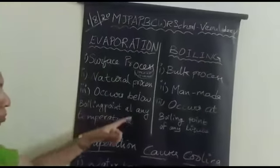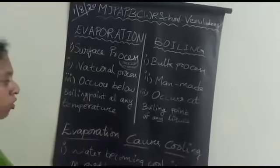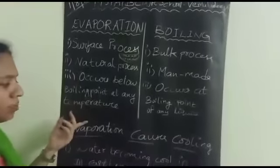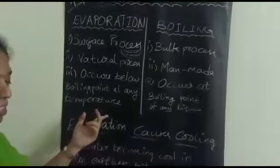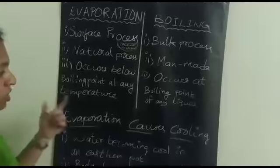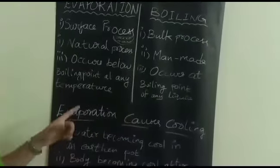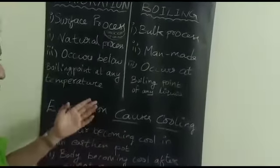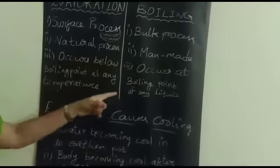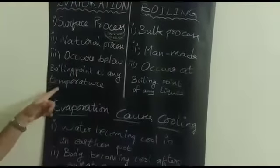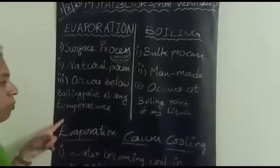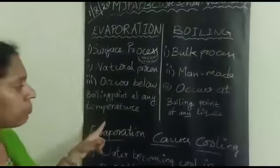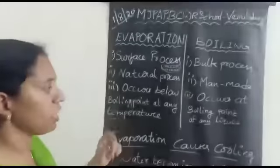Evaporation occurs below boiling point at any temperature. You all know, right? Evaporation occurs at any temperature, either in summer or in winter. The clothes which are washed are going to dry, or water spilled in your home is going to dry. So evaporation occurs. This is the main definition of evaporation. It is a process which occurs below the boiling point at any temperature, below the boiling point of any liquid.